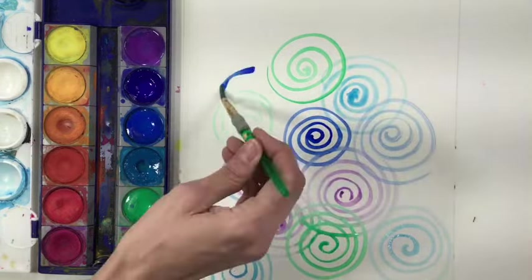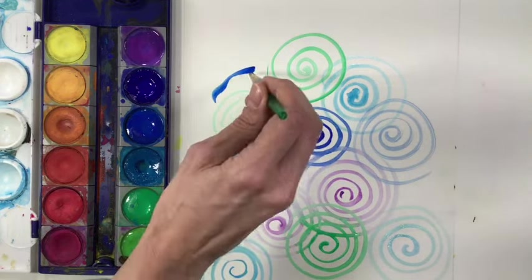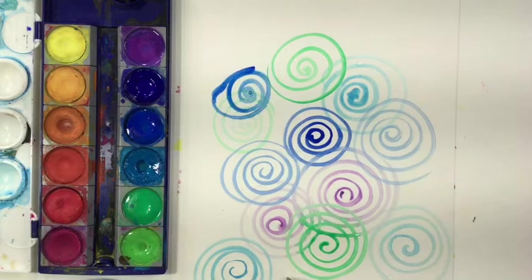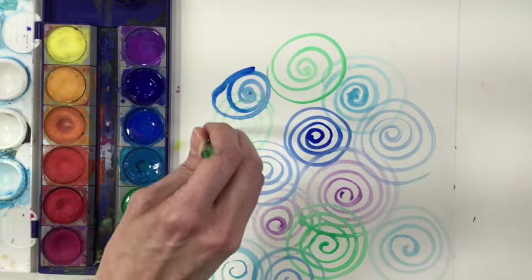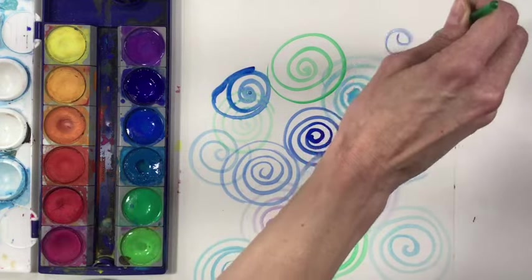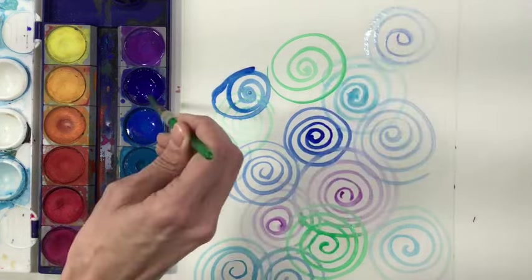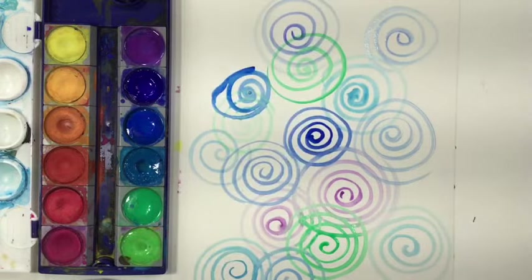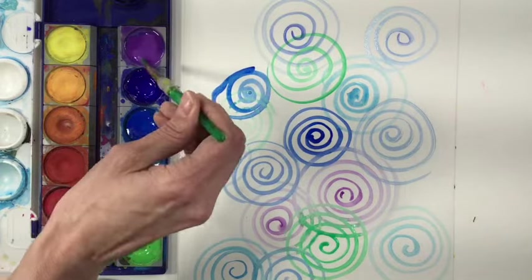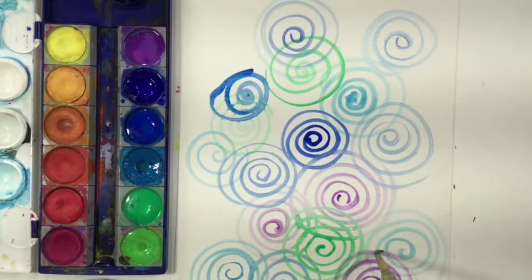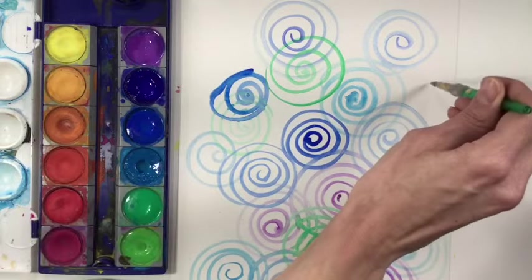I'm going to fill my entire paper with cold colors of spirals. If I notice at any time that my paintbrush is making a scratchy or a dry line, then that means my paintbrush is thirsty. It needs more water. It usually doesn't need more paint. It just needs water because it's thirsty. So don't let your paintbrush go thirsty. Continue painting those spirals until your entire paper is filled.